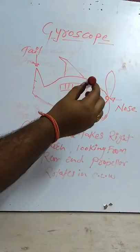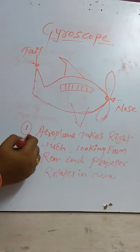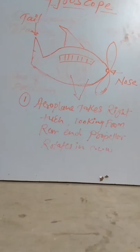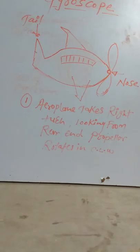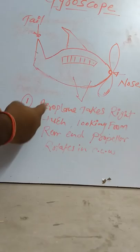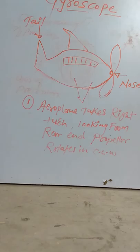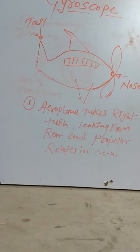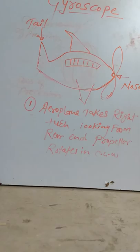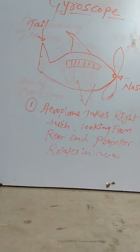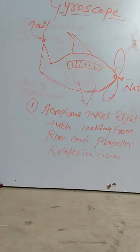In this condition, the nose rises and the tail goes down. After condition number one, we have other conditions such as the aeroplane taking a left turn looking from the rear end with the propeller rotating in counterclockwise direction. Try to find similar positions for various conditions. For more details, login to jitmeepartshala.gnomio.com, your Moodle ID, and check the notes on the gyroscope. In the next class, I will explain the concept of gyroscopic effect on a naval ship. Thank you.